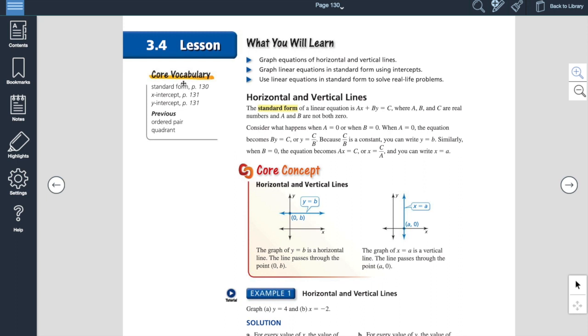All right, so let's take a look at Section 3.4. This is from your e-book, and I'm at page 130. And we're looking at, today, what I've selected on 3.4 is writing or graphing equations in standard form. So we've looked at slope-intercept form, which was y equals mx plus b. Standard form, remember, is ax plus by equals c.